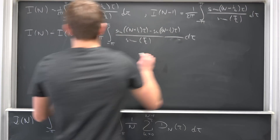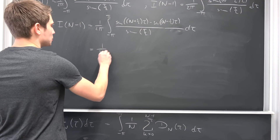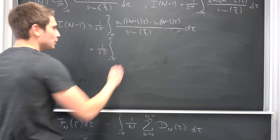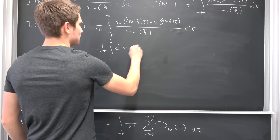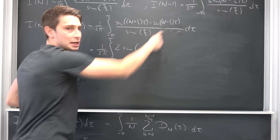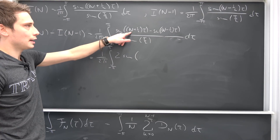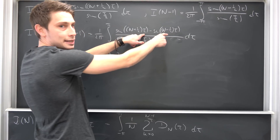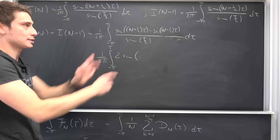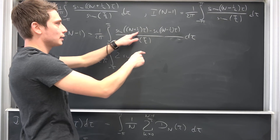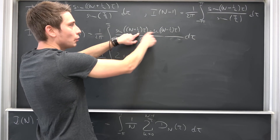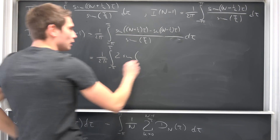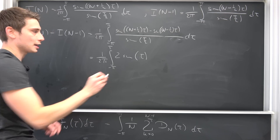So this is nothing but 1 over 2 times pi, integral from negative pi to pi. Now we have 2 times the sine of (a minus b) — that's n times tau minus n times tau — which is just 0. And we have one-half times tau, plus one-half times tau, giving us just tau. So that gives us the sine of tau over 2.